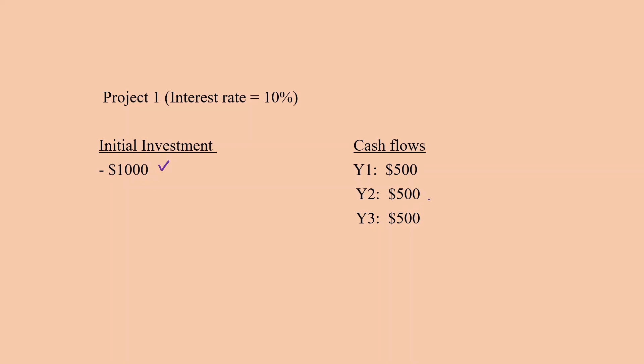Now for the payback period method, you can see that the first two cash flows add up to $1,000, which is our initial investment. So two years is the payback period, but we'll discount these cash flows for the discounted payback period method.